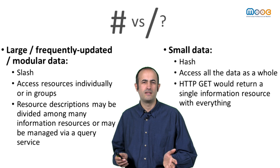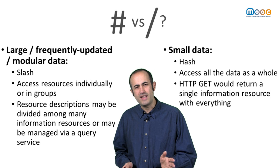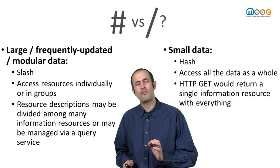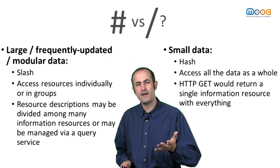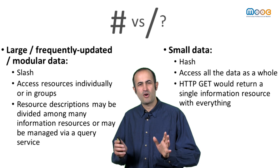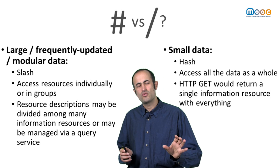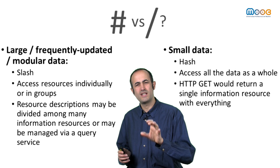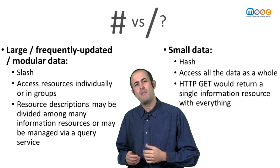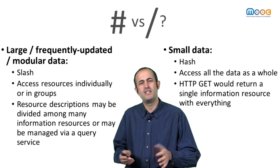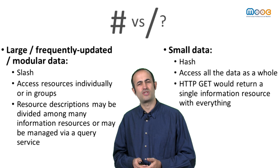It depends on our data. If we have plenty of data, or data are updated frequently or are modular, the best approach is to use slash URIs. This allows us to access resources individually or in groups, with their descriptions distributed among different documents or services.